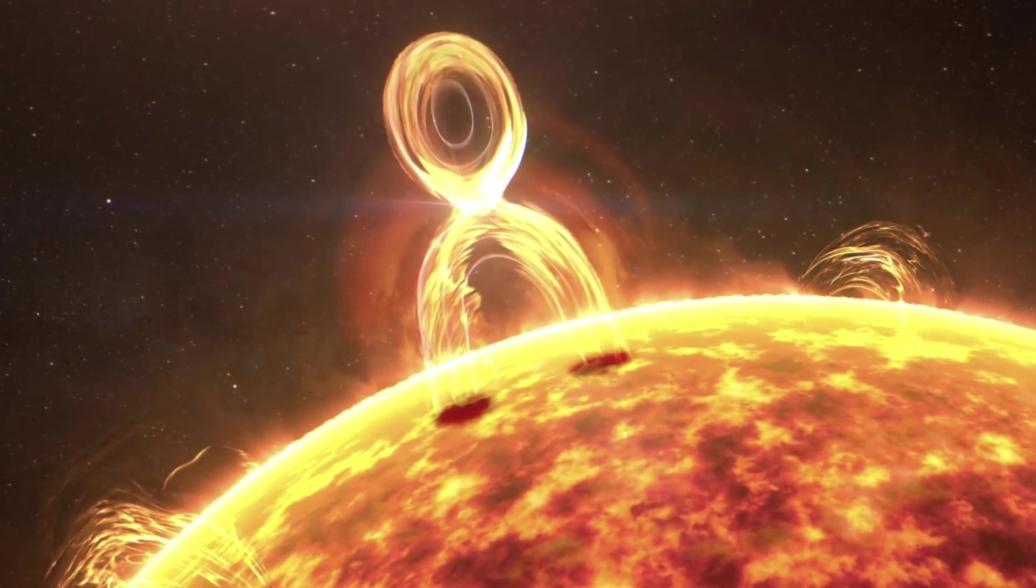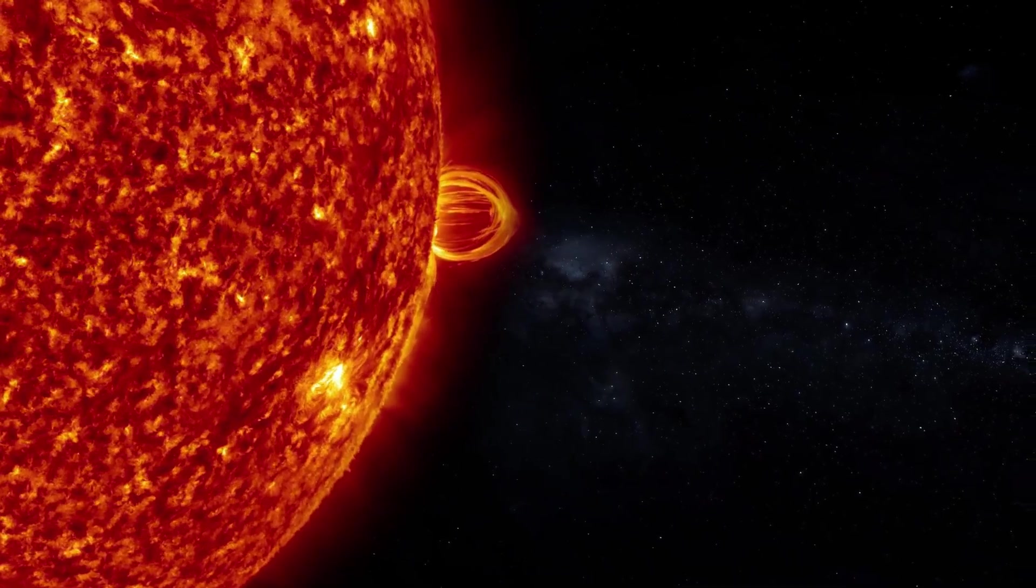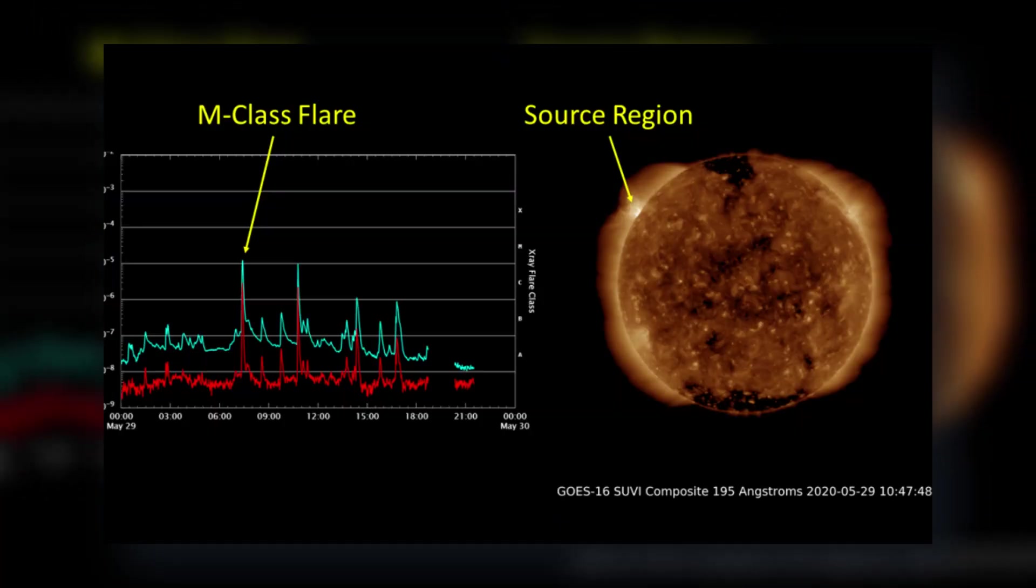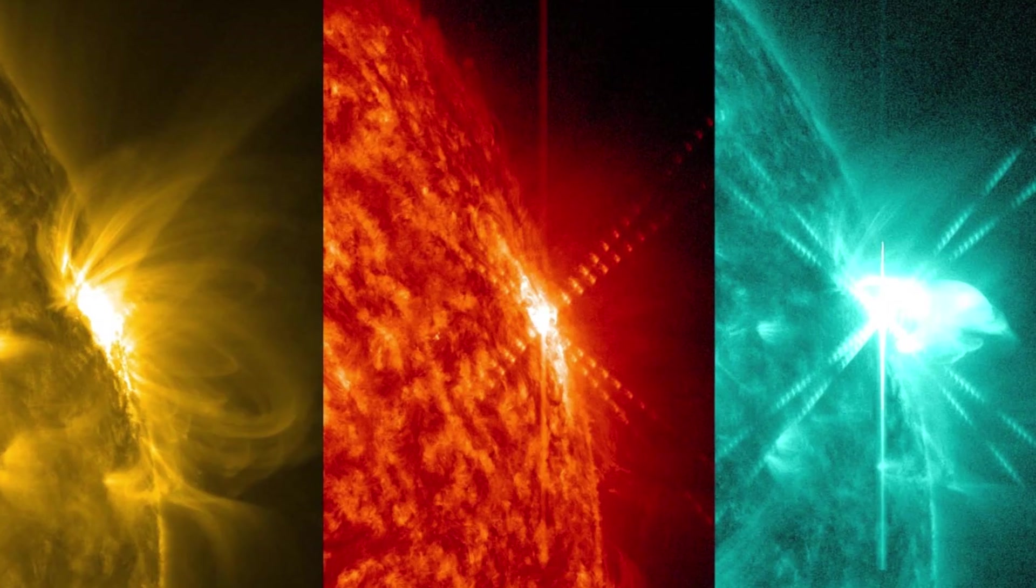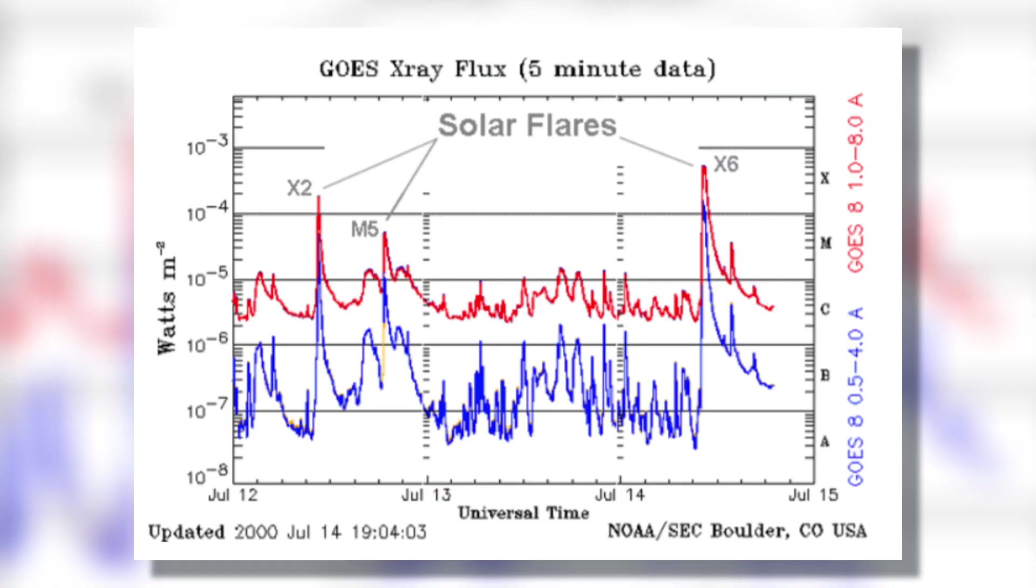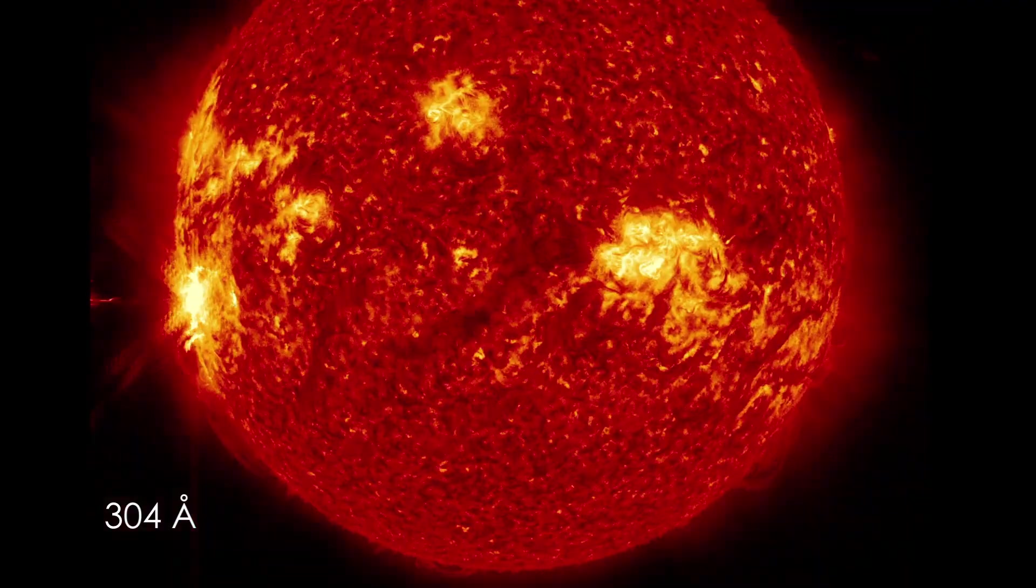For those not familiar with the classification of solar flares, they are ranked based on their intensity, using a logarithmic scale similar to the one used for measuring earthquakes. The scale starts with A-class flares, which are the smallest and occur at levels close to background radiation. It then progresses through B, C, and M, with X-class flares being the most intense.